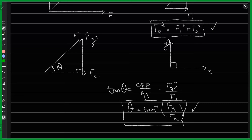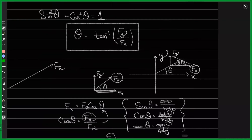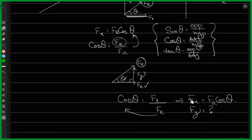Does that make things clear? So that was your question. Now — we found that Fx would be Fr cos theta. And can you tell me what would Fy be in terms of the resultant force and the angle theta? Using the methods of triangles and trigonometry — that's a hint. Anyone tell me what would Fy be?